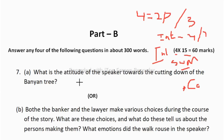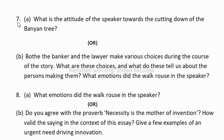Part B questions: Q6 is from Unit 5 — 'The Felling of the Banyan Tree,' which I have already uploaded. Q7: 'Both the banker and the lawyer make various choices' — if you see banker and lawyer, you know this is from 'The Bet.' In 'The Bet,' a banker hosted a party where a discussion arose between life imprisonment and capital punishment. The banker bet with a lawyer to live in solitary confinement for 15 years in exchange for 2 million rubles. Both questions are from Unit 5. My suggestion is to learn 6 summaries so you can answer whatever comes.